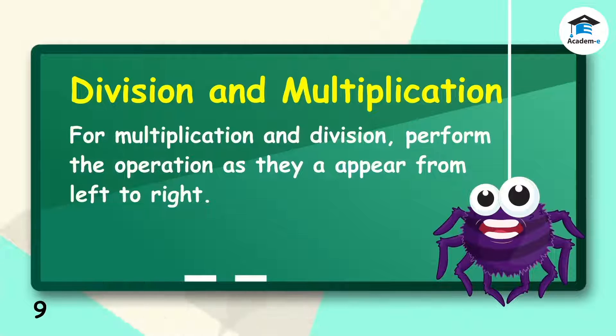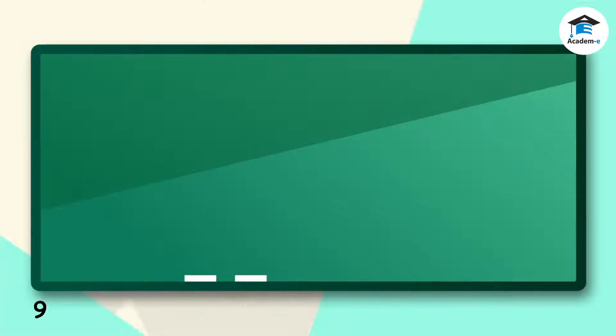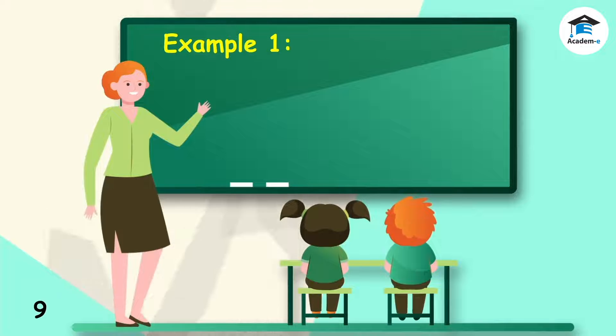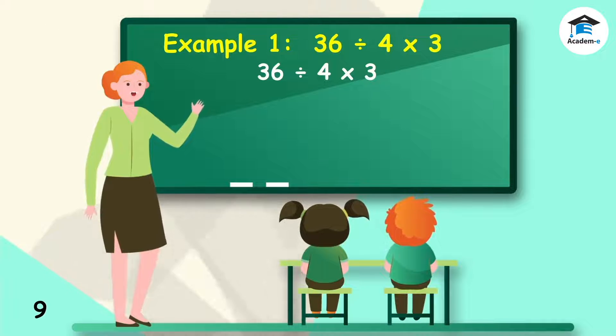Division and multiplication. For multiplication and division, perform the operations as they appear from left to right. We shall do the division first because it comes before multiplication. 36 divided by 4 is 9 and 9 times 3 is 27.